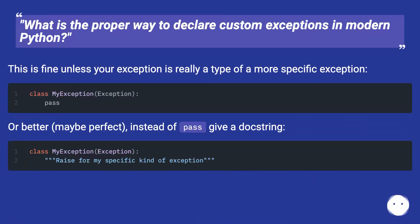What is the proper way to declare custom exceptions in modern Python? Simply subclassing exception is fine unless your exception is really a type of a more specific exception. Or better — maybe perfect — instead of using pass, give a docstring.